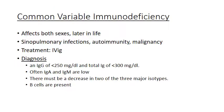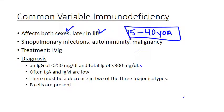Common variable immunodeficiency, or CVID, is a variable syndrome of acquired hypogammaglobulinemia that affects both sexes. It actually shows up later in life — 15 to 40 years of age is most common, though it can occur earlier or later. The incidence is estimated at about 1 in 30,000 to 1 in 50,000 individuals, but it is underdiagnosed and delay in diagnosis is common.